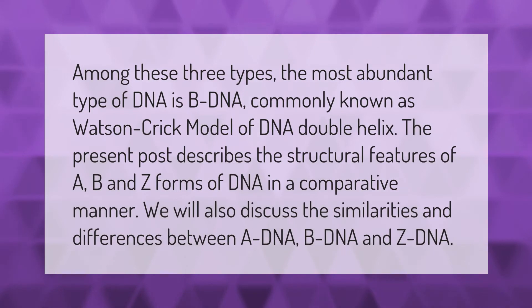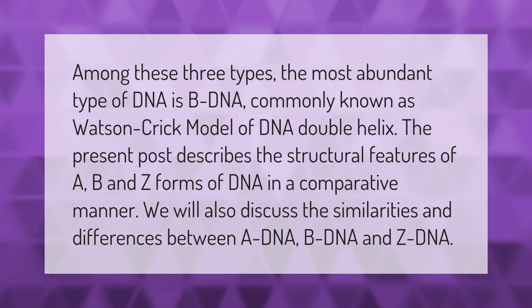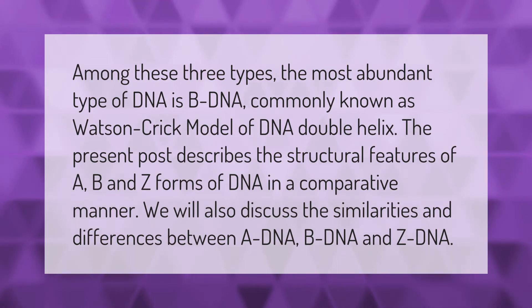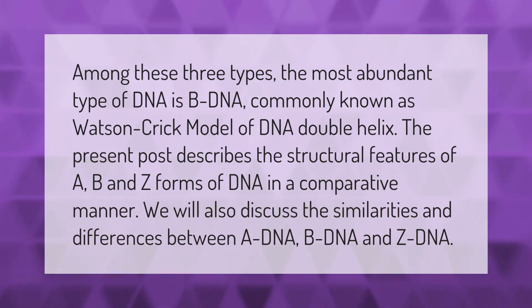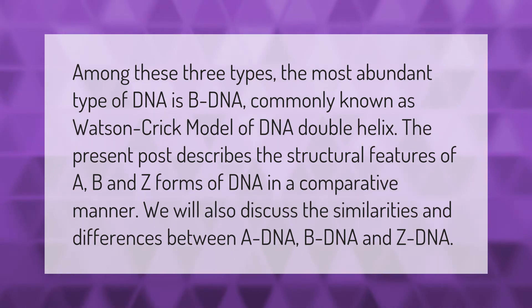Among the three types, the most abundant type of DNA is B-DNA, commonly known as the Watson-Crick model of the DNA double helix. This post describes the structural features of A, B, and Z forms of DNA in a comparative manner, discussing the similarities and differences between A-DNA, B-DNA, and Z-DNA.